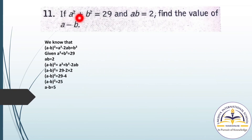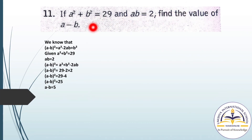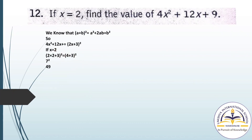Question number 11: if A square plus B square equals 29 and AB equals 2, find the value of A minus B. You have to apply Identity 2: (A - B) whole square equals A square minus 2AB plus B square. Substitute the given values to find A minus B.